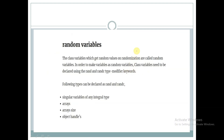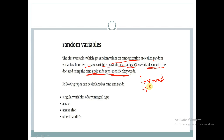Random variables — the class variables which get random values on randomization are called random variables. In order to make variables as random variables, class variables need to be declared using the rand and randc type modifier keywords. So random variables are of two types: one is rand and the other is randc.